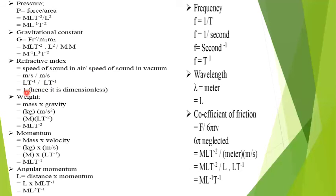For refractive index, we get 1, so we say that the refractive index is dimensionless. If we work on weight, the formula is mass into gravity. Mass unit is kg and gravity unit is meter per second squared. Merging, we get MLT⁻².